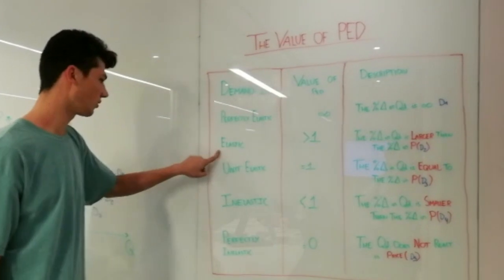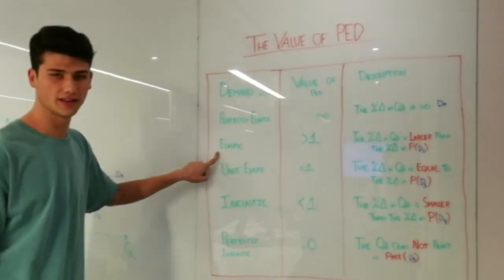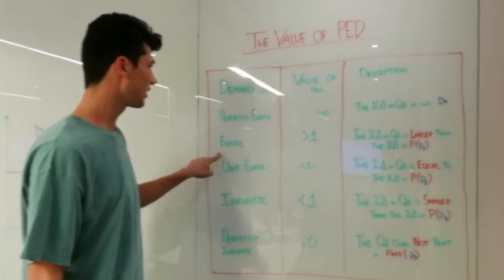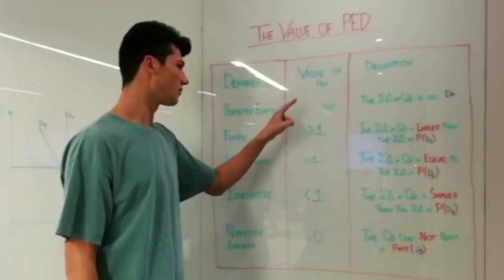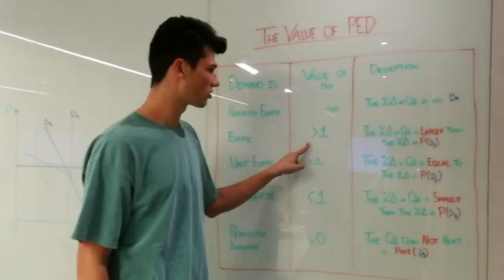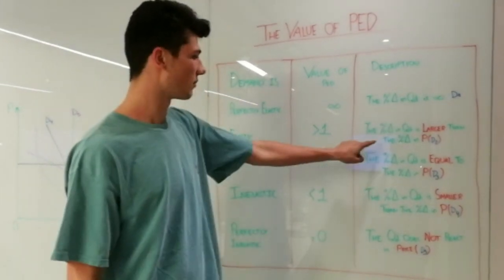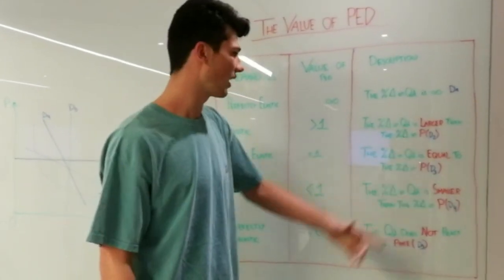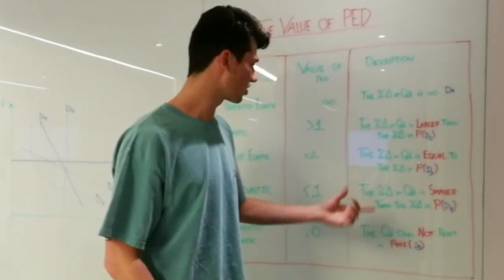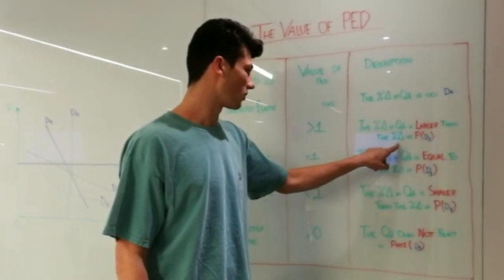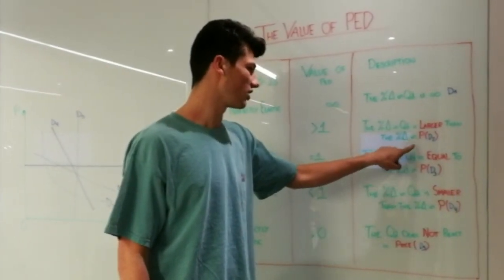Moving on to the elastic type: the value of the PED is going to be greater than one. Therefore, the percentage change in the quantity demanded has to be larger than the percentage change in price.